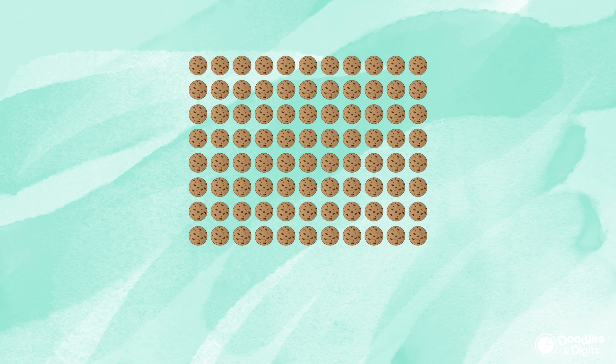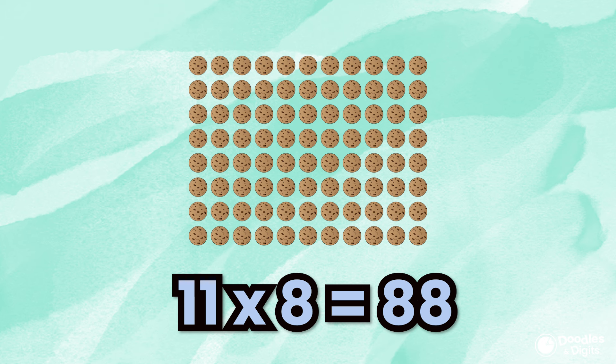Let's try this one. Remember, you can pause this if you need more time. This array is showing 11 columns and 8 rows. 11 times 8 equals 88.